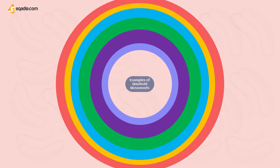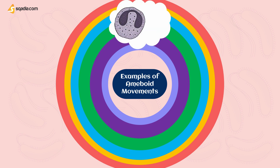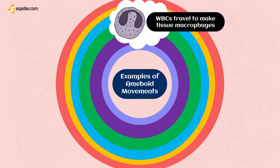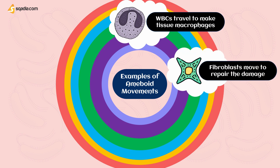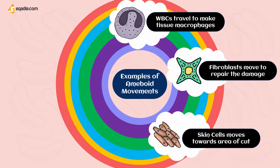Several types of cells in the body perform amoeboid movement. The first is the movement of white blood cells — when they move out of the blood into tissues, they travel from the bloodstream to form tissue macrophages. Whenever you get an injury, fibroblasts move toward the damaged area to repair it. When you get a cut, germinal cells move toward the area for skin regeneration.